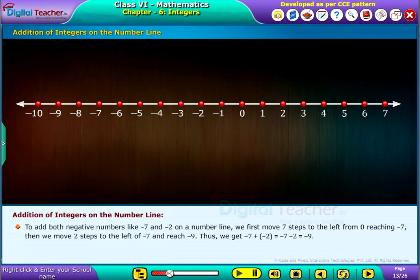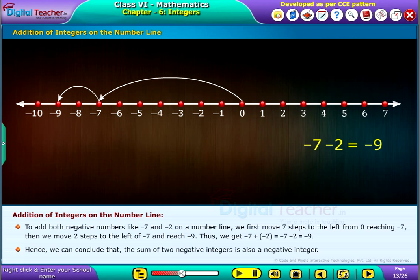To add both negative numbers like minus 7 and minus 2 on a number line, we first move 7 steps to the left from 0 reaching minus 7, then we move 2 steps to the left of minus 7 and reach minus 9. Thus, we get minus 7 plus minus 2 equal to minus 7 minus 2 which is equal to minus 9. Hence we can conclude that the sum of 2 negative integers is also a negative integer.